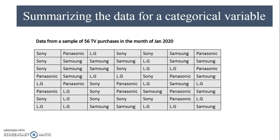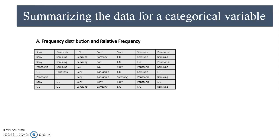For example, we have data from a sample of 56 TV purchases in the month of January 2020, and these are the brands of TV. So this is a sample of 56 TV brands. This is categorical data because only the identification of the brand is given, so we can summarize it using frequency distribution and relative frequency.